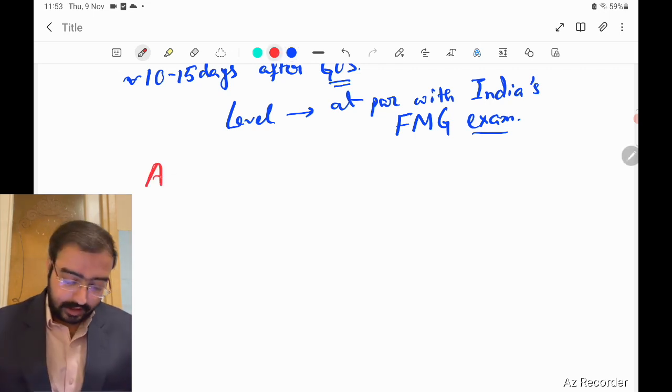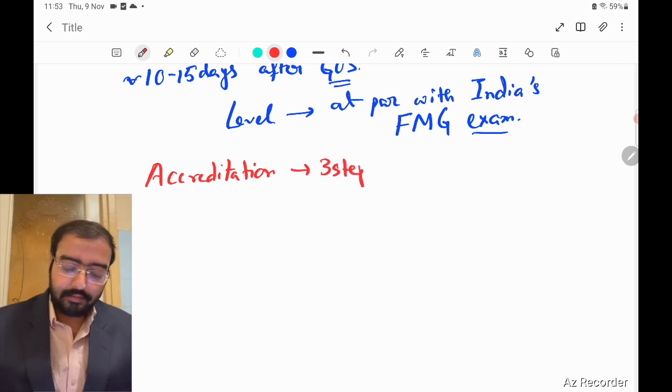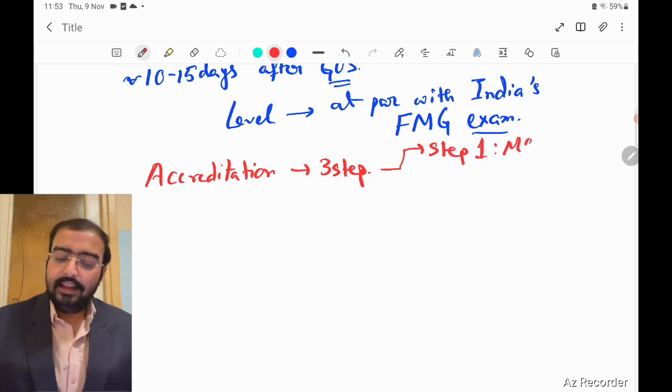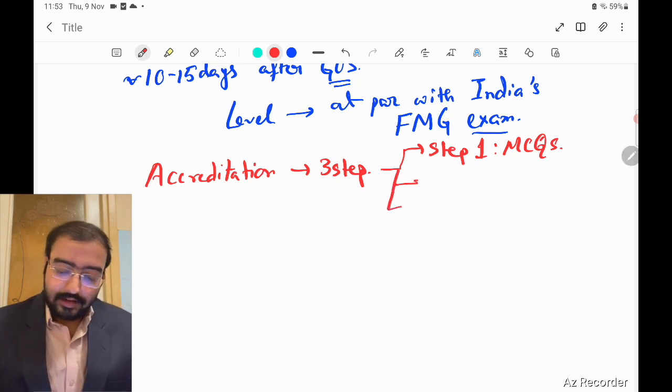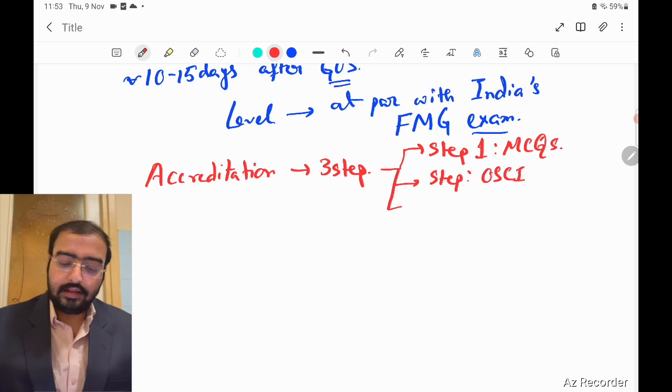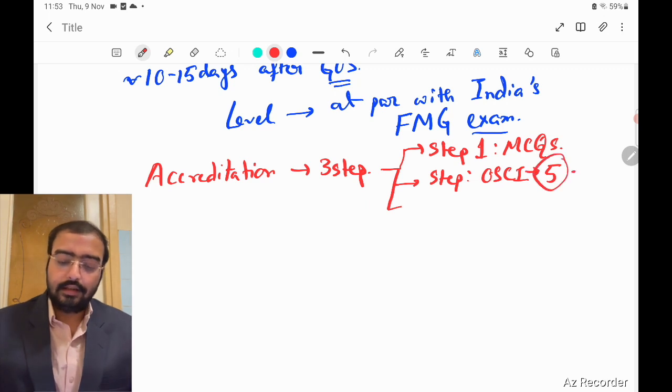Now, how does the exam look like? Let's talk about the structure. Accreditation is a three-step exam. Step one is based on MCQs - fortunately, only one answer correct. Step two is OSCE, station-to-station OSCEs with five stations. Step three is again MCQ but based on zadacha or situational tasks.